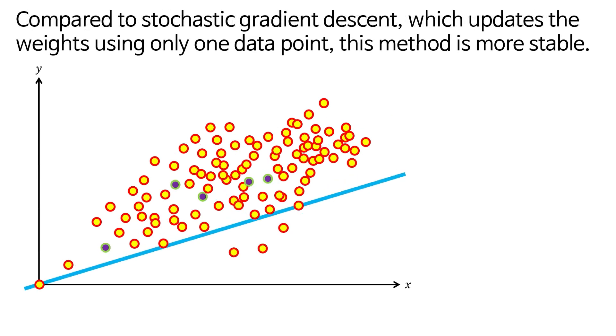compared to stochastic gradient descent, which updates the weights using only one data point, this method is more stable.